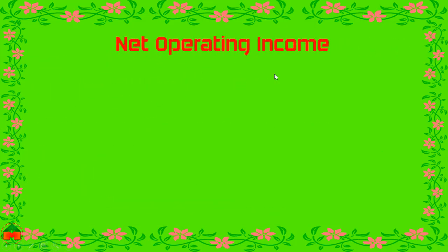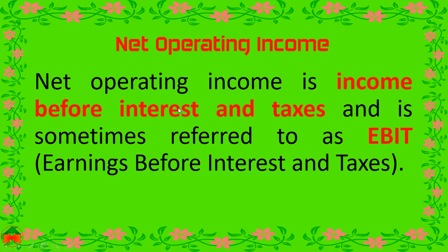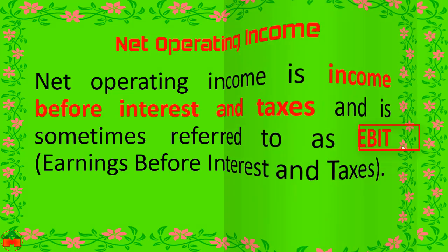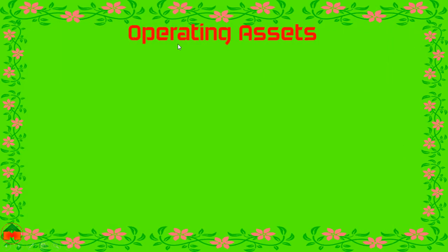In the formula, net operating income is income before interest and taxes, sometimes referred to as EBIT — earnings before interest and taxes. On the other hand, we also need the amount of average operating assets.